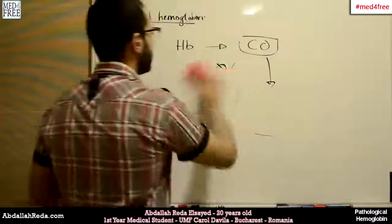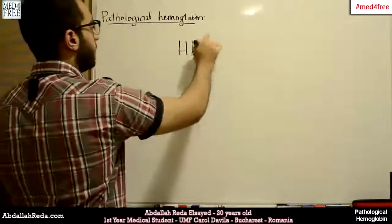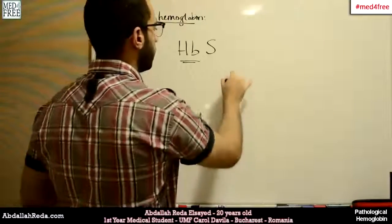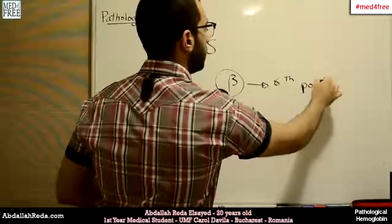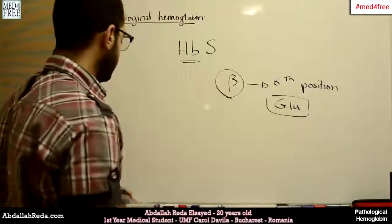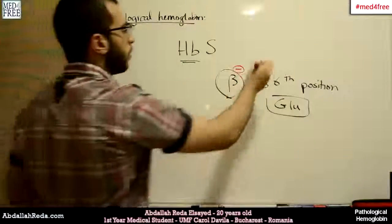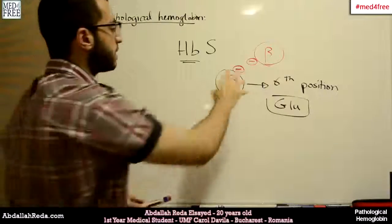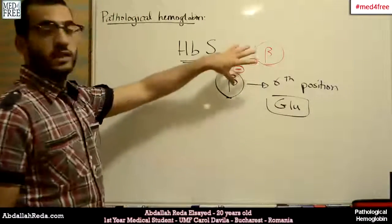Another type is sickle cell hemoglobin — HbS, sickle cell anemia. Normally, in the beta chains of hemoglobin at the sixth position, we have glutamic acid. This glutamic acid forms negative charges, so when the beta chain of another hemoglobin comes closer, they repel each other and the distance between the chains is kept at a safe distance, so the cells do not stick to each other.